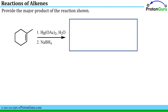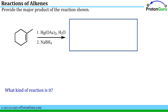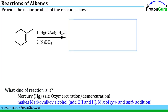We're first asked to provide the major product of this reaction, so we look at it to figure out what kind of reaction it is. When you see the mercury salt — mercury is this Hg — you should recognize right away it's oxymercuration-demercuration. We only use this reaction to do the Markovnikov addition of alcohols: add OH to the more substituted carbon and H to the less substituted carbon, and it's a mix of syn and anti-addition.